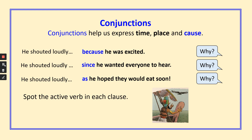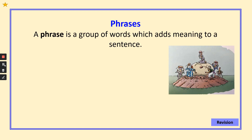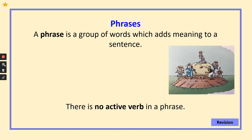Spot the active verb in each of those clauses. Now let's have a go at phrases. A phrase is where a group of words add meaning to a sentence. There is no active verb in a phrase. For example: on the island — what's on the island, who's on the island, whereabouts on the island? Just 'on the island' is a phrase on its own, but it must be added to something to make more sense.